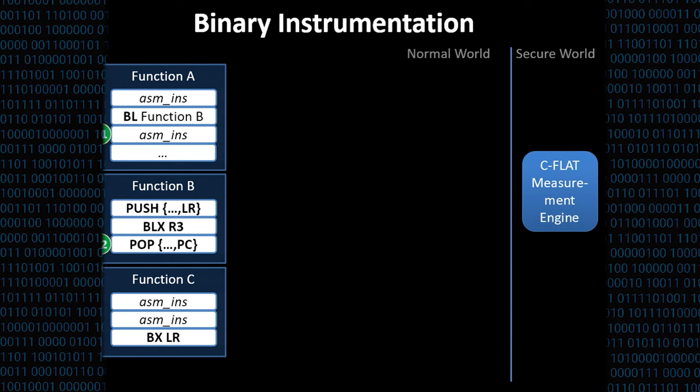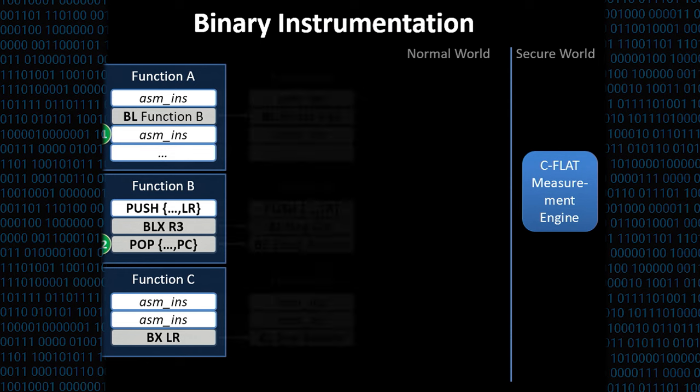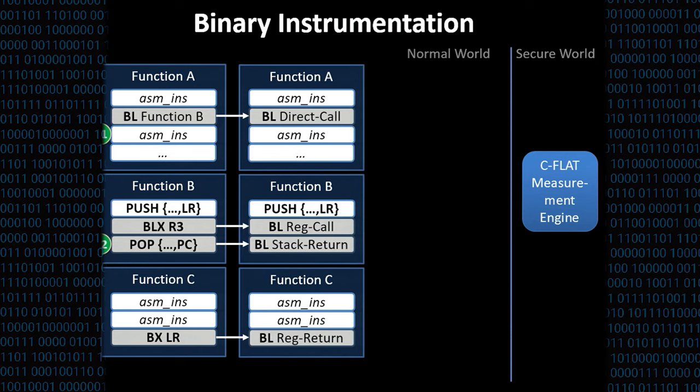To give you a glimpse on how the binary instrumentation works, consider the following ARM code-based example in which we have four control flow transitions, two function calls, one direct and one indirect, and two returns, one based on the stack and another one based on the register. All these control flow transitions are replaced using binary instrumentation techniques with a function call on ARM based on a branch with link instruction. Conveniently, this instruction sets the link register on ARM and the link register holds always the return address or, in this example, the address of the next instruction.